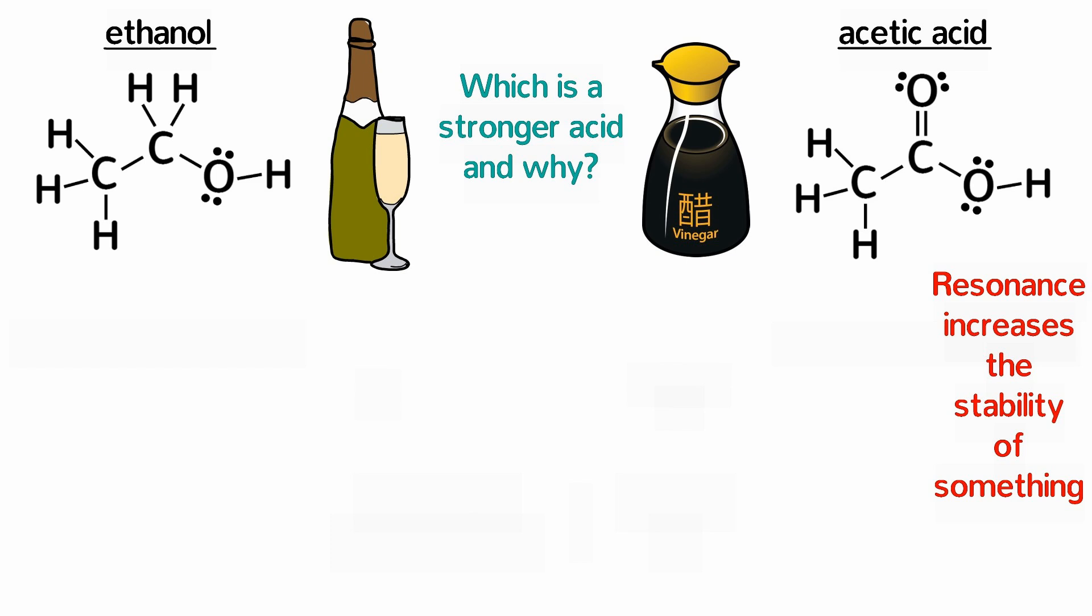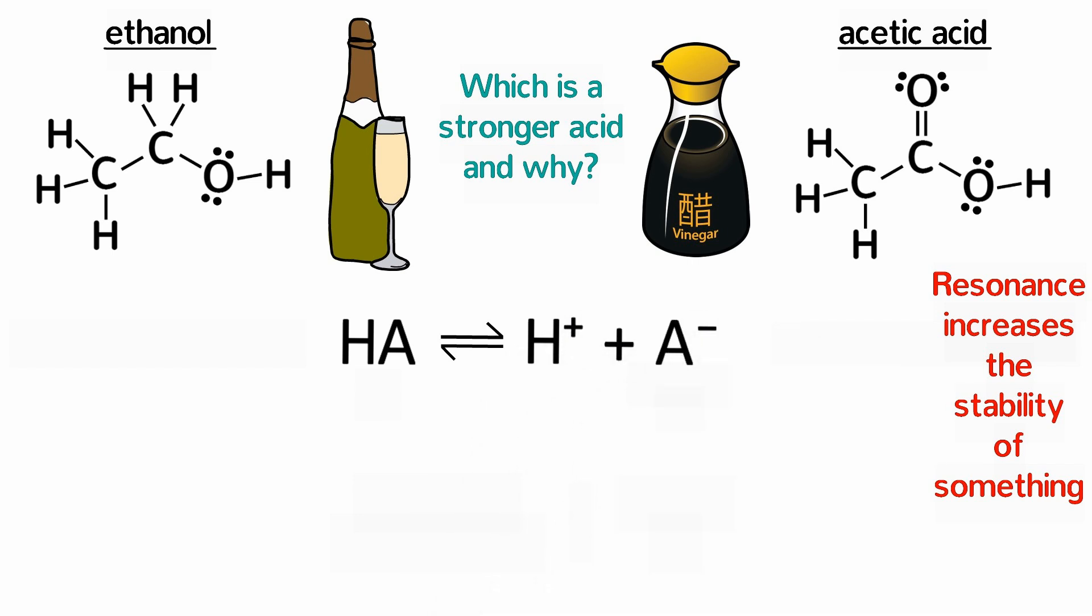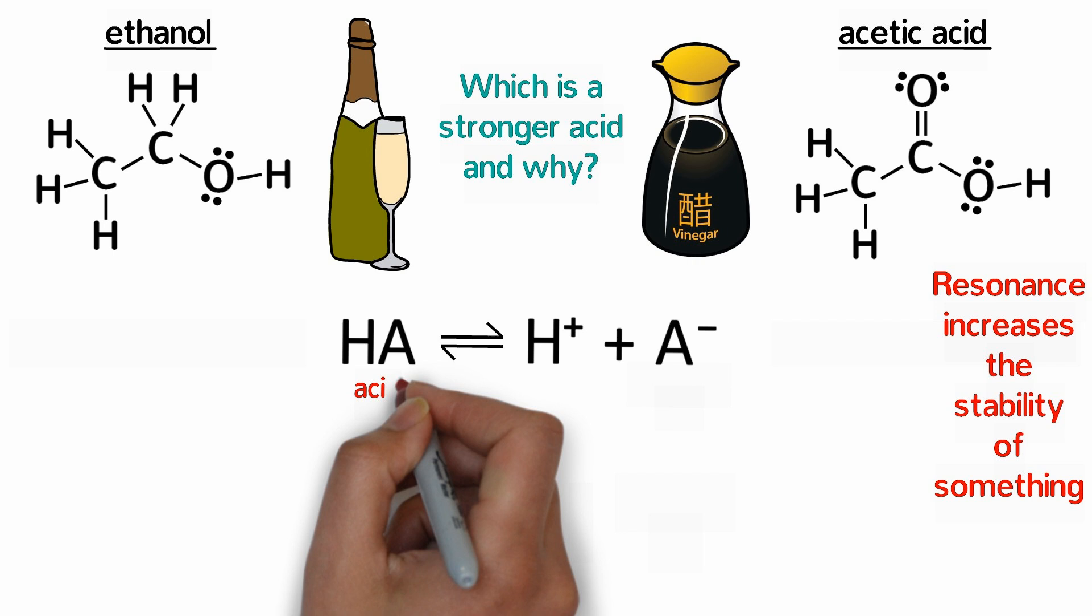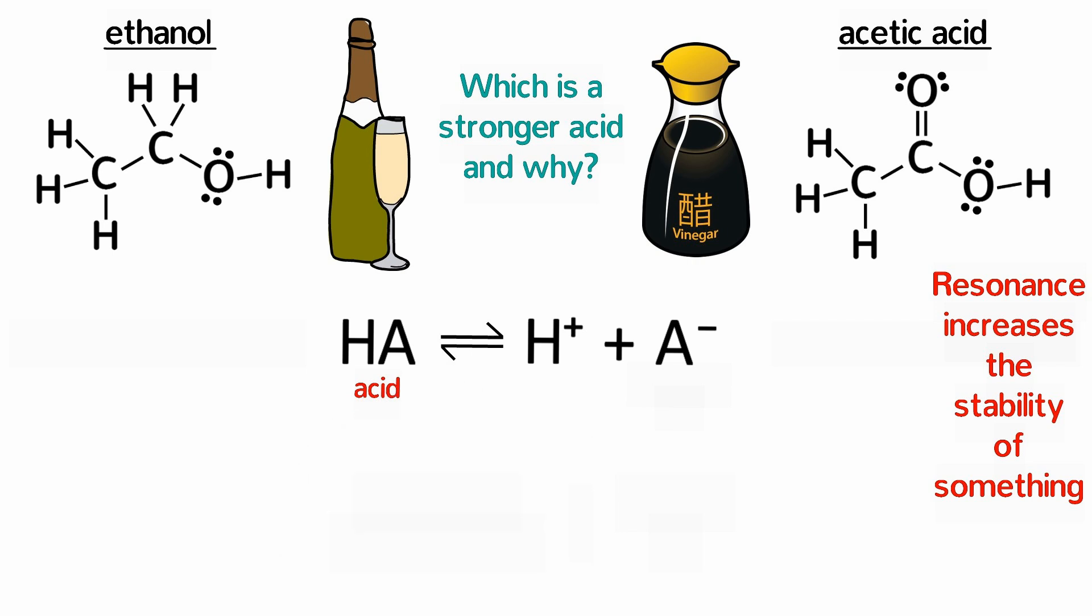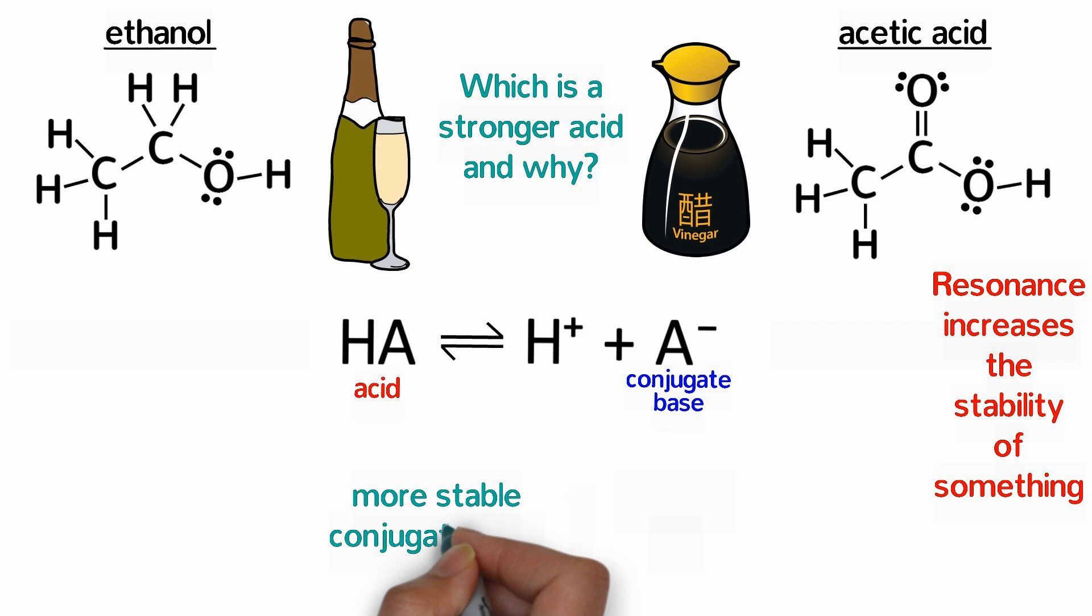To answer that question, let's look at the acid ionization reaction where HA represents any acid. Because one of the products is always H+, the acidity or tendency of an acid to ionize is related to the stability of its conjugate base. The more stable the conjugate base, the stronger the acid. So to compare the acidity of these two compounds, let's compare the stability of their conjugate bases.